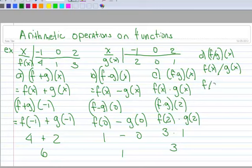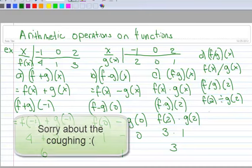So I have f divided by g at 2. That means I have f at 2 divided by g at 2. Well, when I put 2 into f of x, out comes 3.